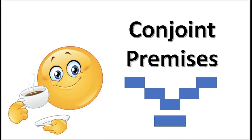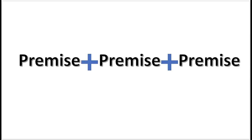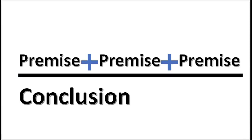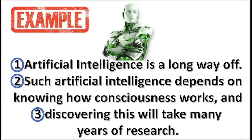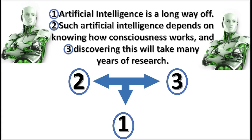The next diagram is called the conjoint premises. This diagram is used when two or more premises depend on one another in support of a conclusion. Here is an example. The diagram asserts that statements 2 and 3 support statement 1 conjointly. Independently, these statements provide little or no support — they depend on one another in supporting the conclusion.